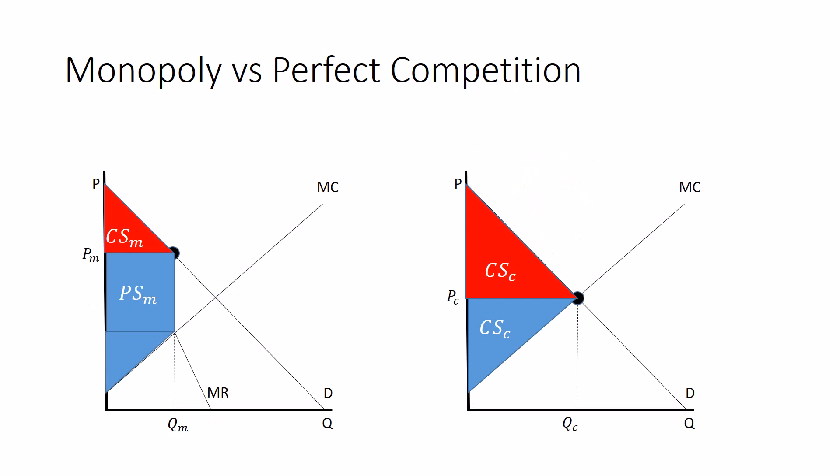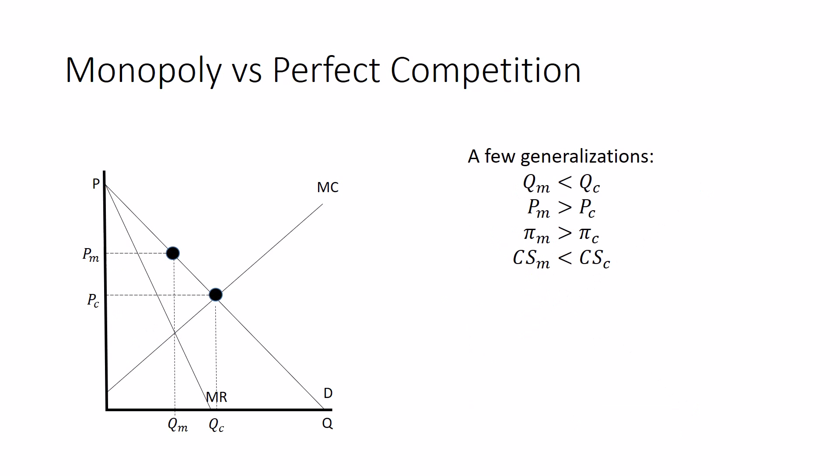So the picture is kind of reminiscent of like a price floor or a quota or something. The way some of the consumer surplus has been redistributed to the producer. And there's also that empty space where no surplus happens.